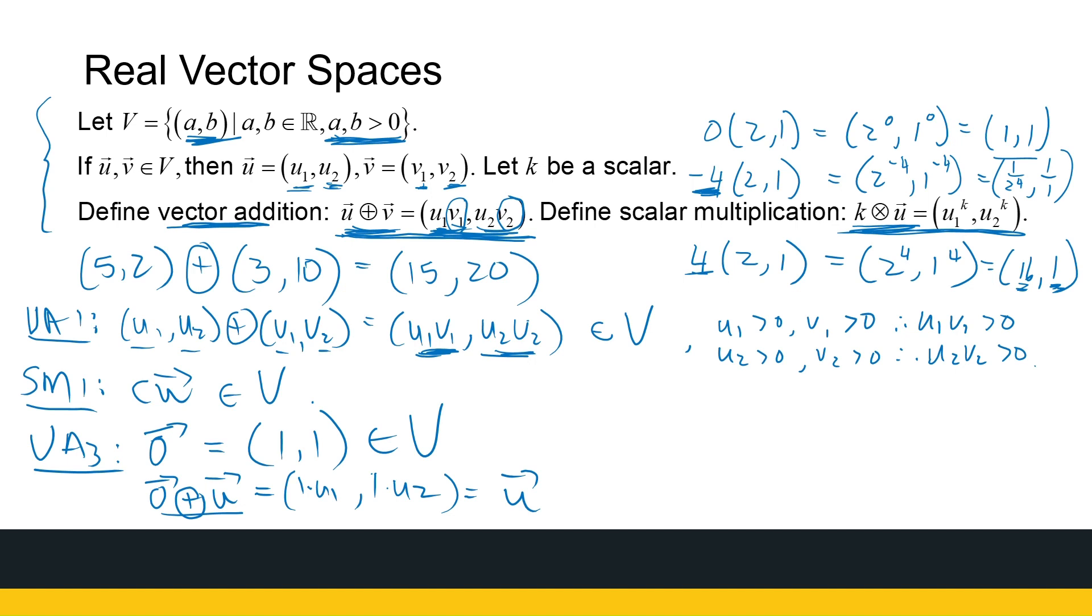The negative, what will the negative be? Well, if u is equal to (u1, u2), I must find minus u. What must minus u look like? Well, if I add u to minus u, I must get my 0 vector out, which means I must get (1, 1) out. Well, what do we do? Well, what must I multiply with u1 to get 1? 1 over u1. 1 over u2.